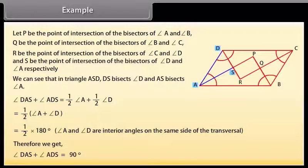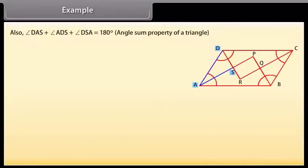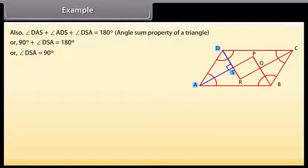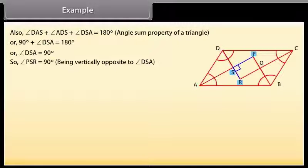Therefore angle DAS + angle ADS = 90 degrees. Also, angle DAS + angle ADS + angle DSA = 180 degrees (angle sum property of a triangle), so 90 + angle DSA = 180, giving angle DSA = 90 degrees. So angle PSR = 90 degrees, being vertically opposite to angle DSA.